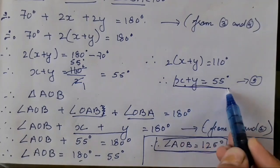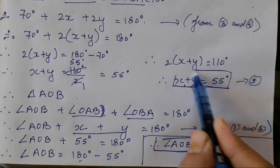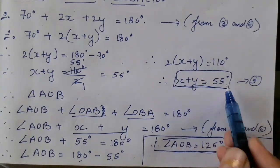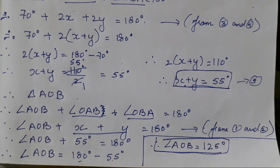So angle AOB equals 125°. The sum X plus Y was 55° and the required angle AOB is 125°.